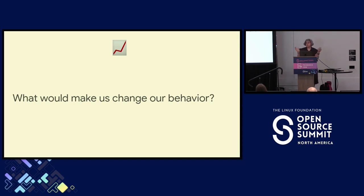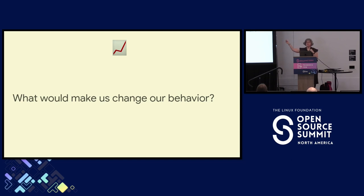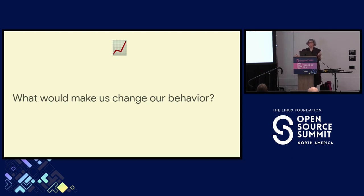If you chose increased PRs as your metric and instead your PRs went to zero, what would you do? Do you have a plan? What if it went to 1,000 PRs — are you prepared for that? A lot of times people think about the worst-case scenario and they don't think about the horrible best-case scenario. What if somebody decided to use a generative AI tool and crashed your project with 10,000 PRs? Is that really a best-case scenario? When thinking about your metrics, think about what would make you change your behavior, and only use those metrics.